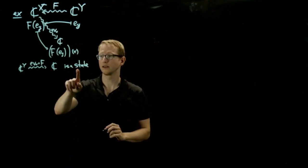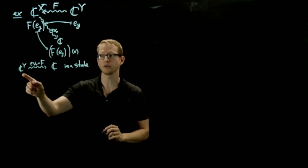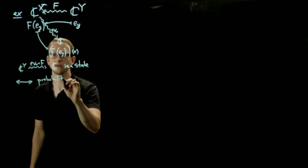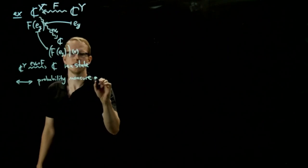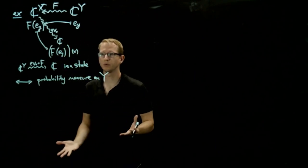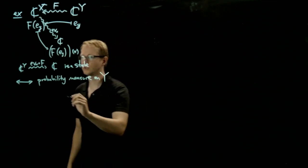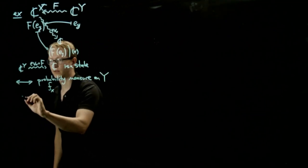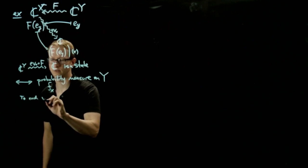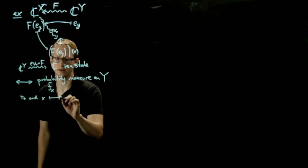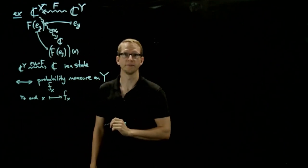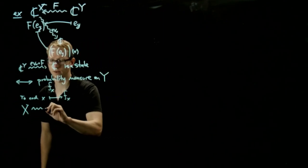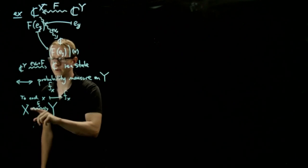But we already know what every state looks like on a function space — this corresponds to a probability measure on Y. Let's call that probability measure F subscript x. Therefore, to each x in X, we get an associated probability measure on Y. That should sound familiar — that's exactly the definition of a stochastic map from X to Y.